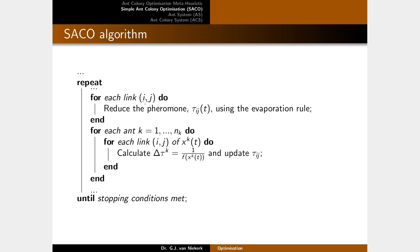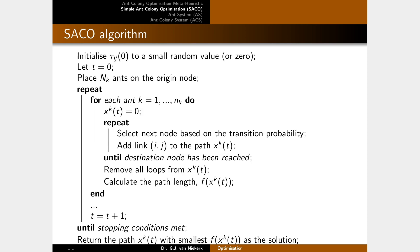Once the destination is reached, remove all loops from the path, calculate the path length, and use this to update the path. For each link ij, reduce pheromone levels based on an evaporation rule — otherwise the algorithm can't dynamically update itself. Then for each ant, for each link ij that's part of that ant's path, calculate the amount of pheromone to drop and update tau_ij. Update the iteration counter and keep repeating until the stopping condition is met. Finally, return the path with the smallest length — the ant that found the best solution.